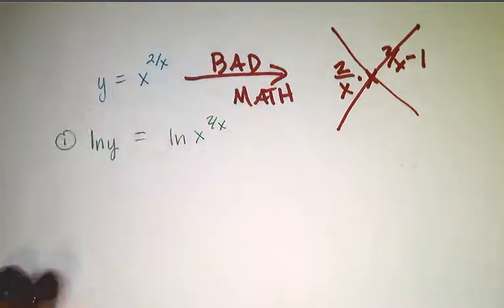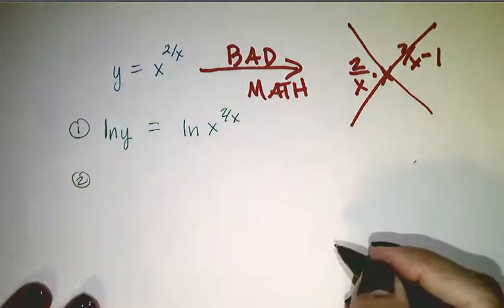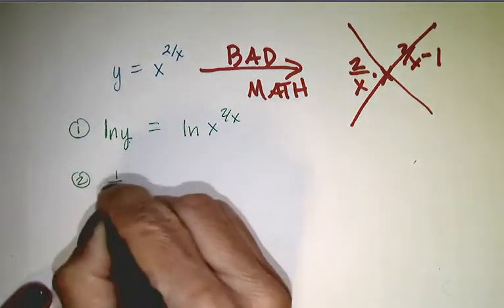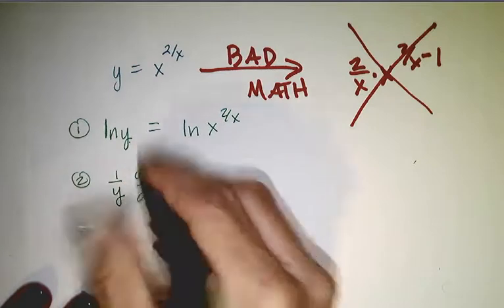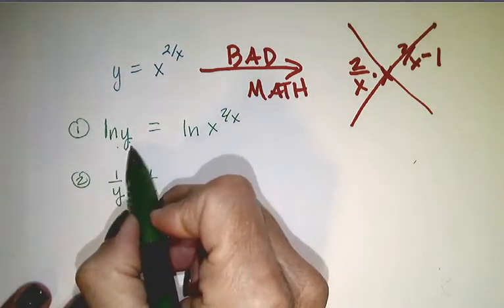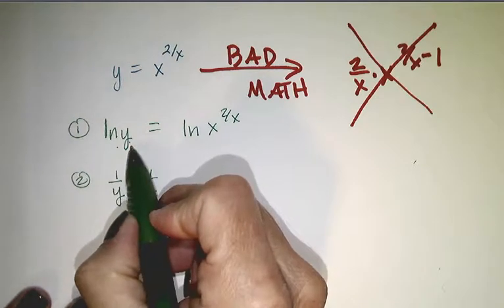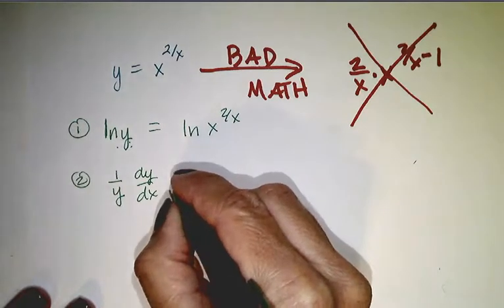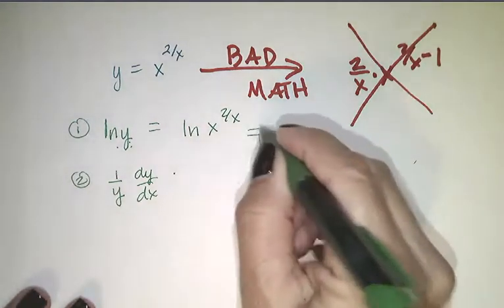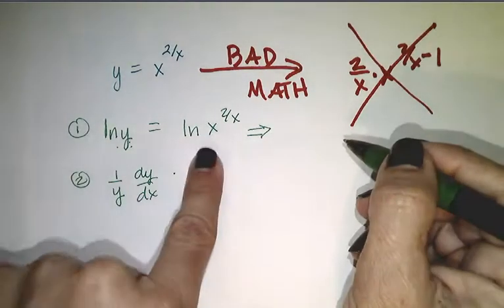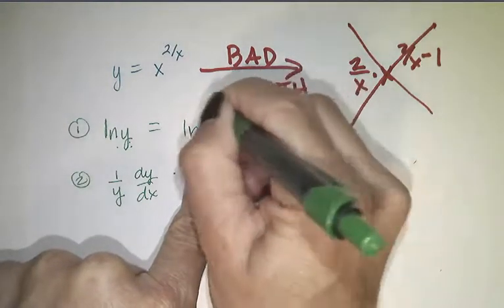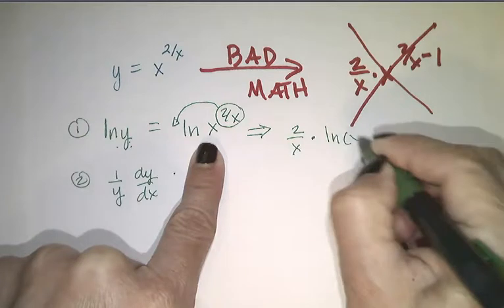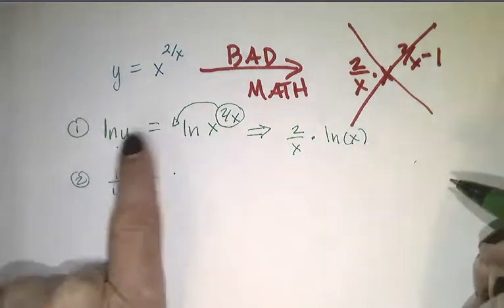That's step one. Actually, I forgot a step. Before we take the derivative, the reason we took the natural log is that it allows the exponent to come down. So this right here is equal to 2 over x times the natural log of x. This side is equal to that side.